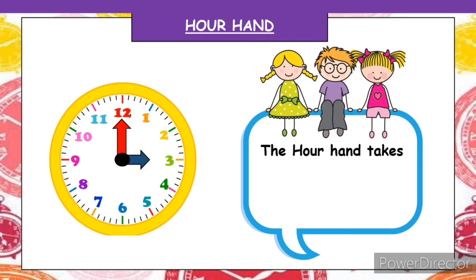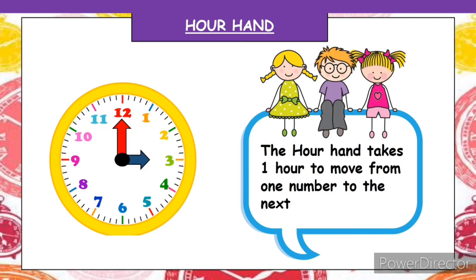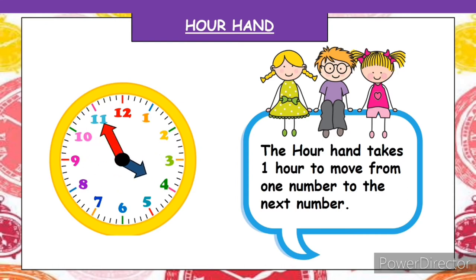The hour hand takes one hour to move from one number to the next number. As you can see, the red hand is the minute hand and the blue hand is the hour hand. Right now the hour hand is at 3 and the minute hand is at 12. After one hour, the hour hand will move from 3 to 4.